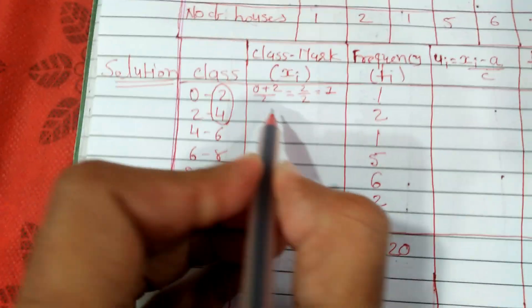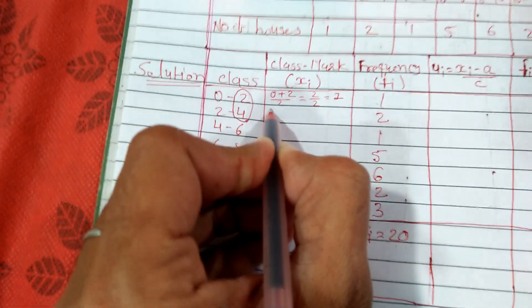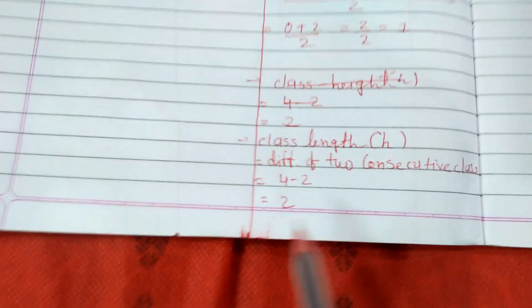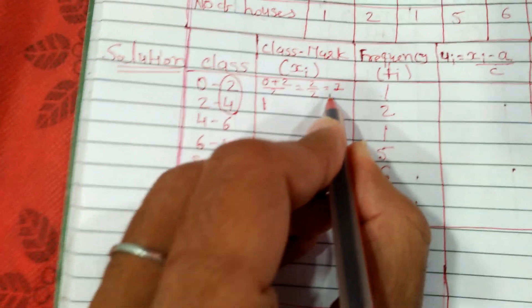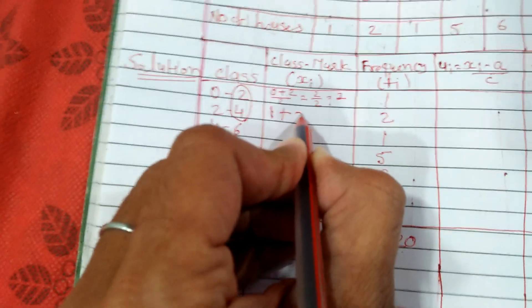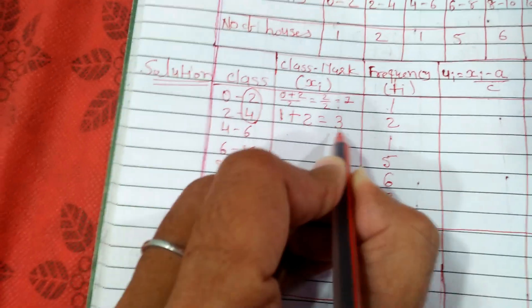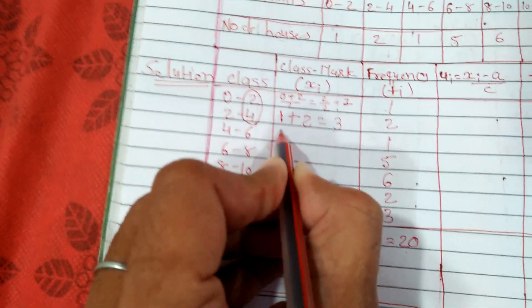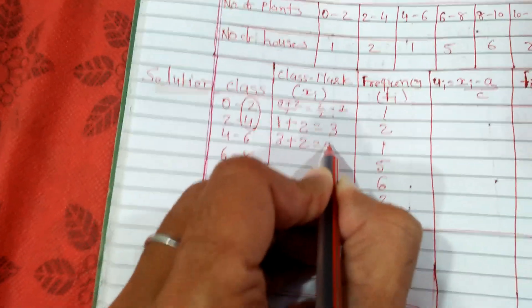To find the class mark for the second class, we will add this value of H to the previous class mark. That means 1 plus class length 2 equals 3. For this class, class mark of previous class plus class length 2 will be 5.